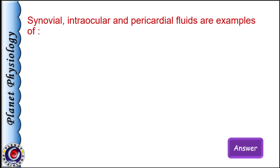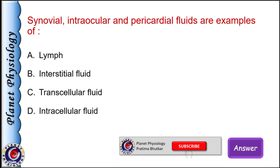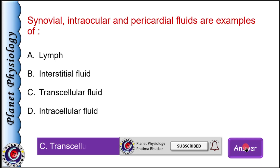Synovial, intraocular, and pericardial fluids are examples of: a) lymph, b) interstitial fluid, c) transcellular fluid, and d) intracellular fluid. Transcellular fluid constitutes less than 1% of extracellular fluid and includes fluids in the lumen of structures lined by epithelial cells — for example, fluids in GIT, cerebrospinal fluid, pleural fluid, pericardial fluid, intraocular fluid, synovial fluid, etc. Correct answer is C: transcellular fluid.